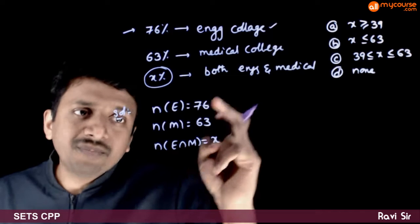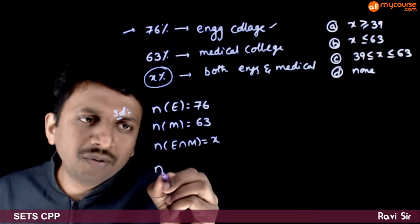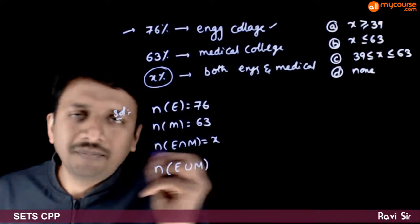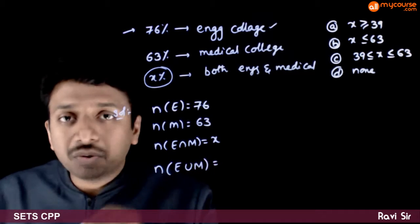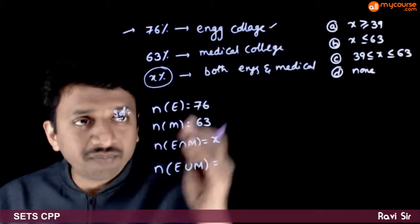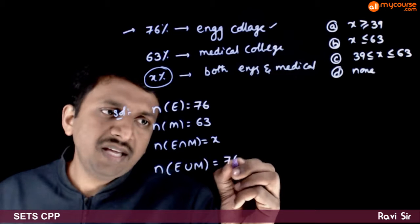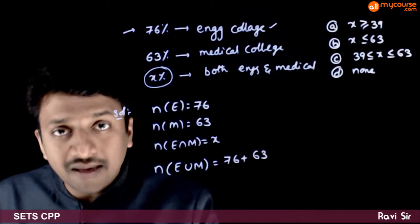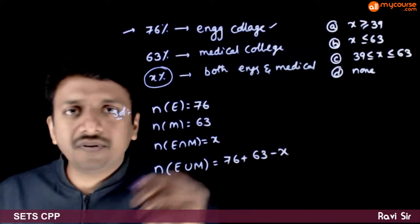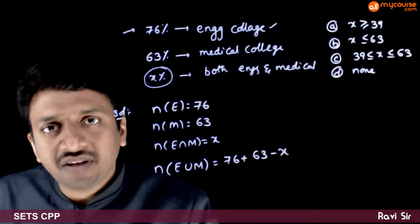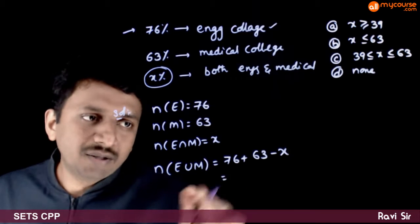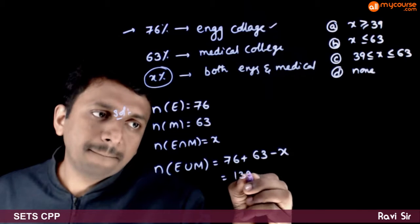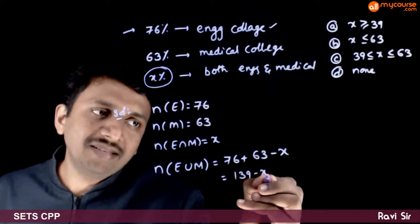Now, from these three, what can you say about N(E ∪ M)? N(E ∪ M) from the formula is N(E) + N(M) − N(E ∩ M), which is equal to 139 − X.